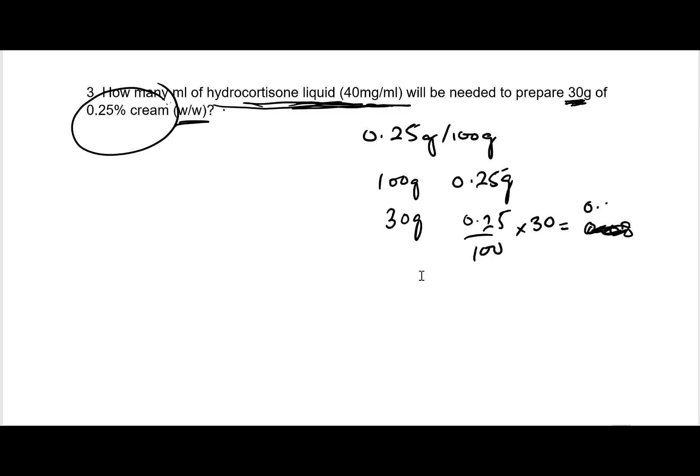That comes out to 0.075 grams of hydrocortisone needed. Now converting to milligrams — because the liquid concentration is given in mg/ml — going from a bigger unit to a smaller unit, the decimal moves three places to the right, giving 75 milligrams. So in the final cream I would need 75 milligrams of hydrocortisone.